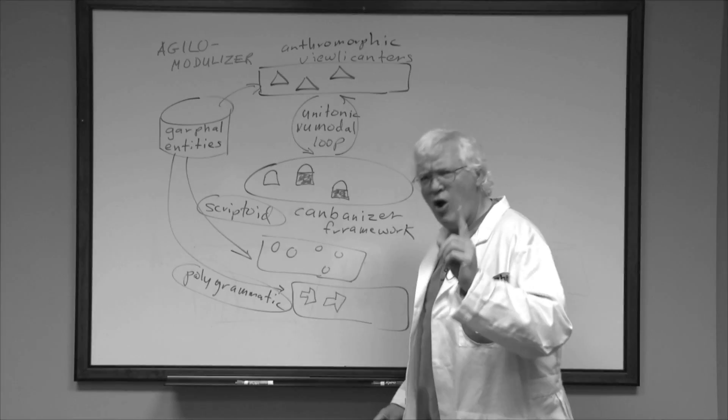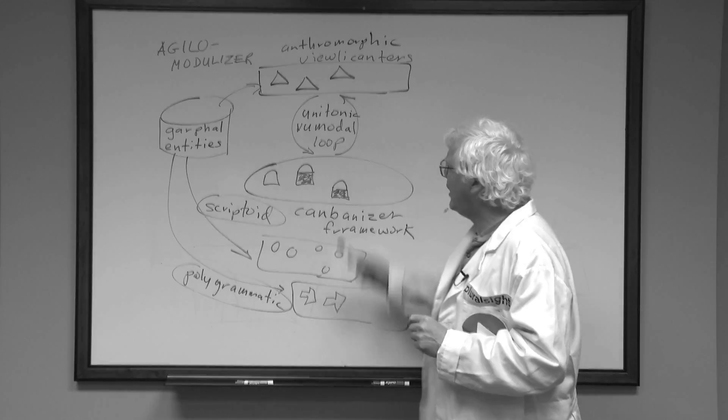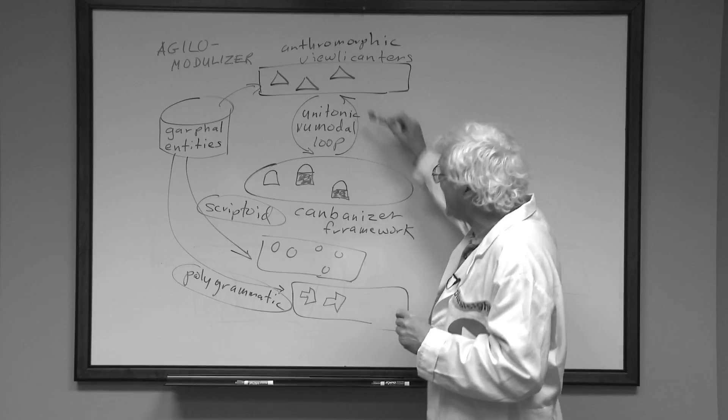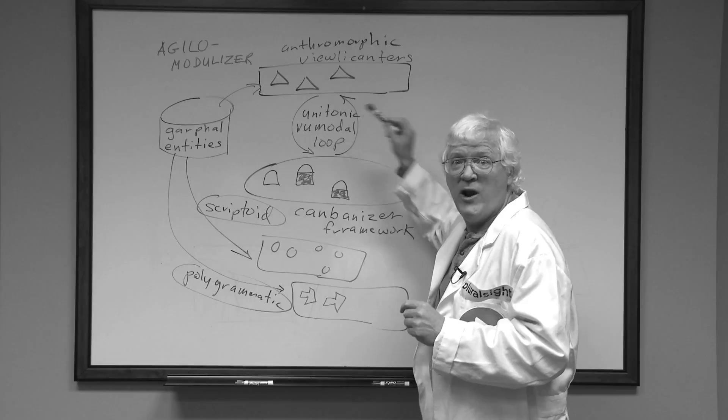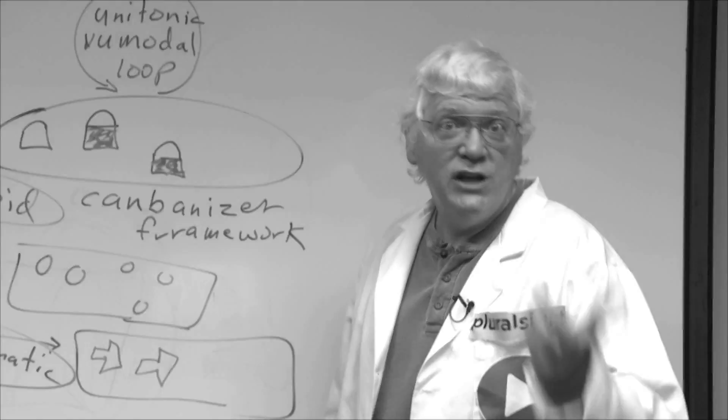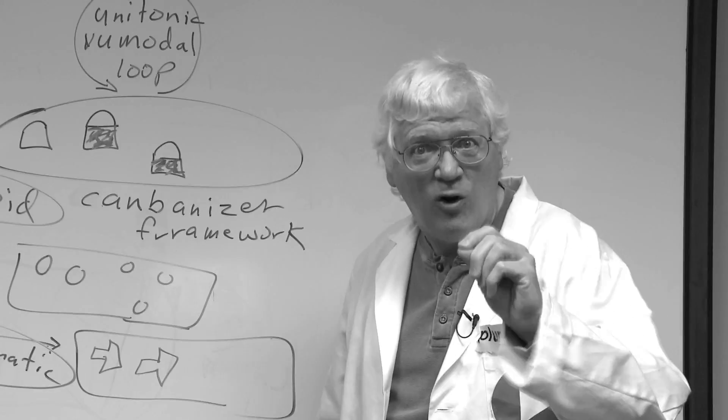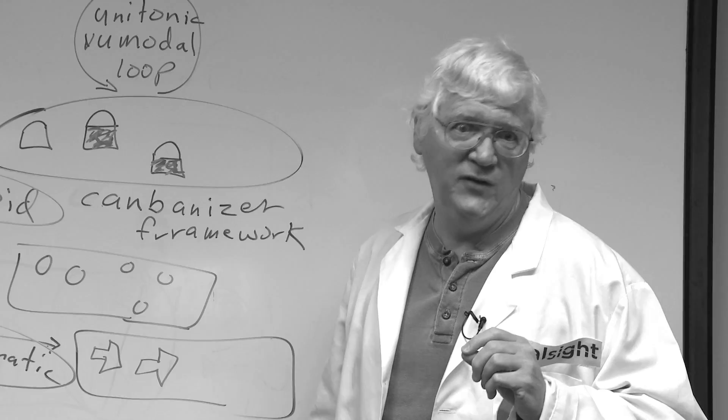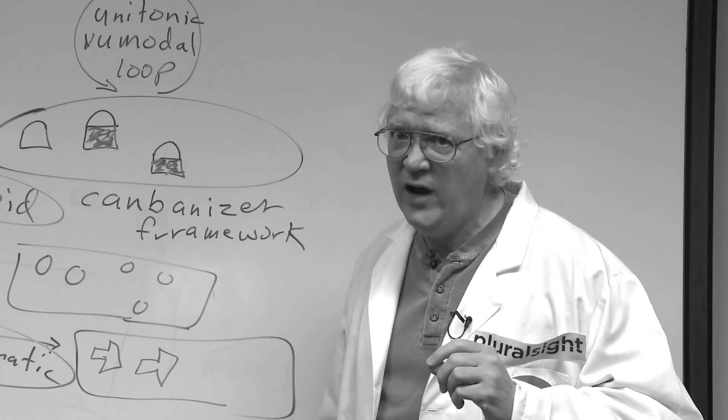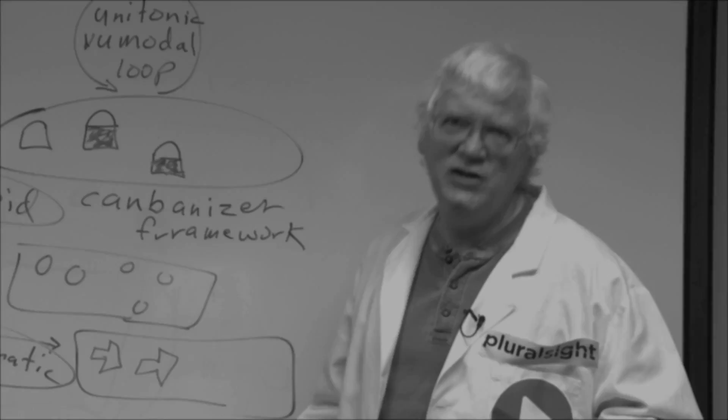The Agillo Modulizer also uses a visual backlometer to provide metricizable feedback in the pair-programmable unitonic viewmodal loop. Using a Kanbanizer framework, the Agillo Modulizer effectively connects garphal entities to anthracentic viewlicanters. This accelerates the development pipeline by reconciling differential splints.